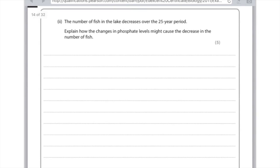The number of fish in the lake decreases over the 25-year period. Explain how the changes in phosphate levels might cause the decrease in the number of fish. This question screams eutrophication. For the first mark, write that increases in phosphate levels may lead to algal growth. They block the light for the plants which live beneath them, leading to plant death. The plant death is food for microbes, but microbes respire, meaning there's less oxygen available for other aquatic animals. First mark algal growth, second mark block light, third mark plant death, fourth mark bacteria build up, fifth mark less oxygen, sixth mark due to respiration.